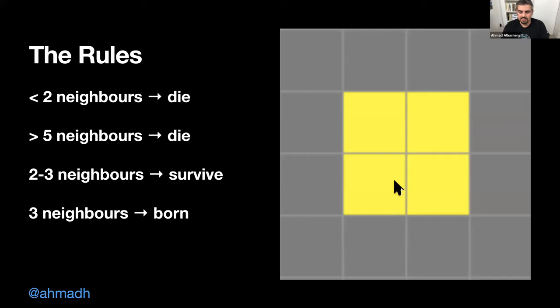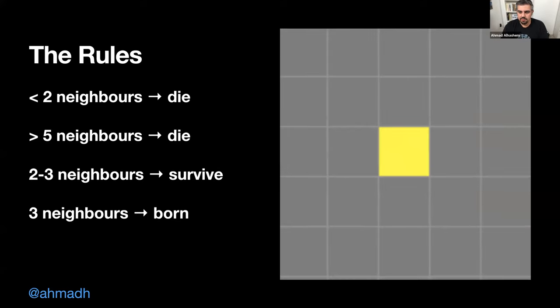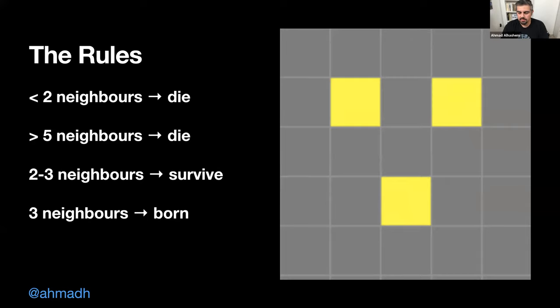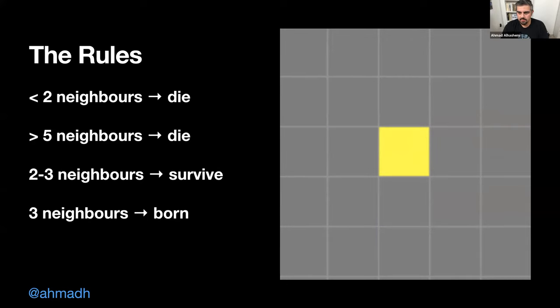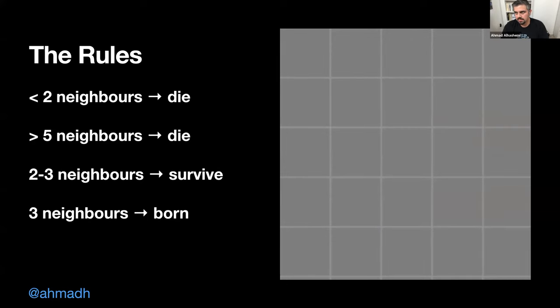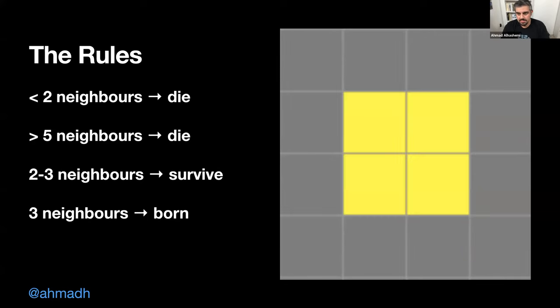If I move to the next generation, you'll see the exact same pattern — it does not change from generation to generation. So we've seen two examples: one where the pattern disappears after two cycles, and one where it stays like this forever, unchanging.